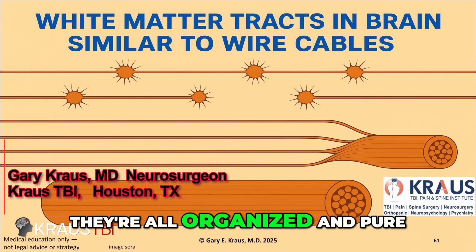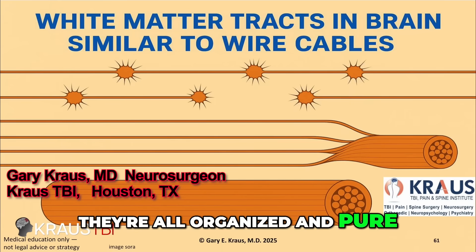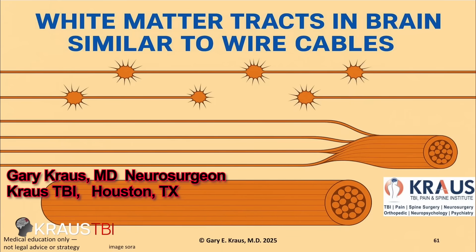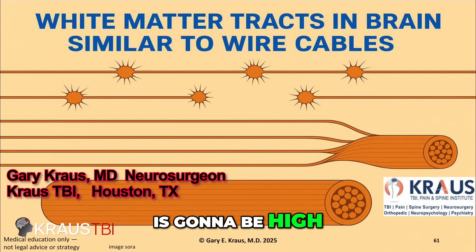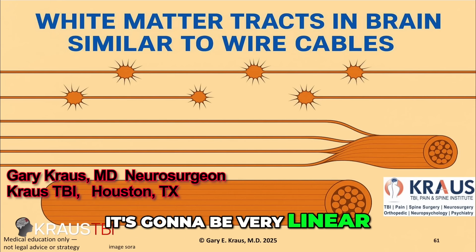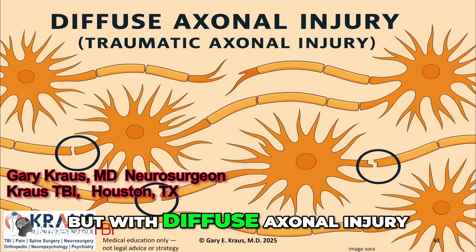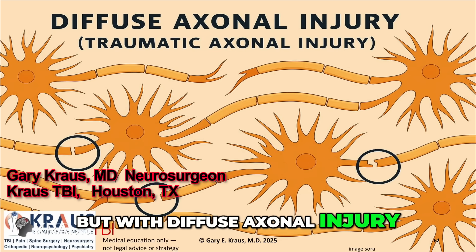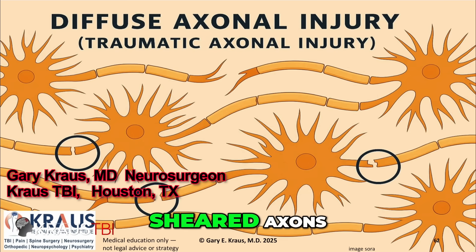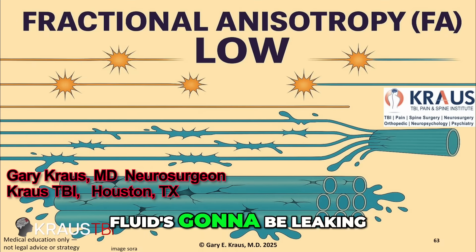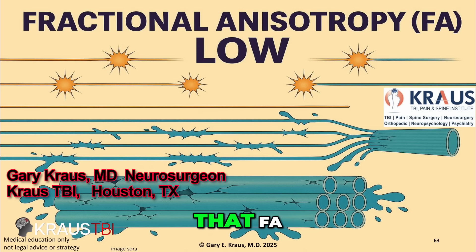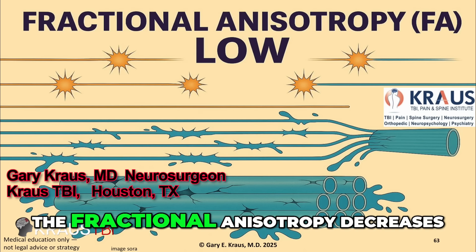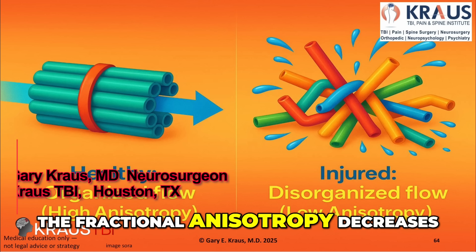If axons are all organized and pure, intact, the FA — fractional anisotropy — is going to be high. It's going to be very linear. But with diffuse axonal injury, torn axons, sheared axons, we can imagine the fluid's going to be leaking all over. So it's no longer like a tube — it's more diffuse. So that FA, the fractional anisotropy, decreases.